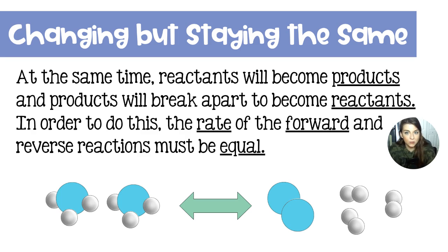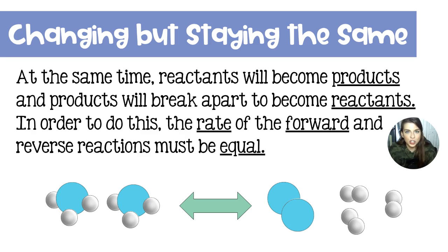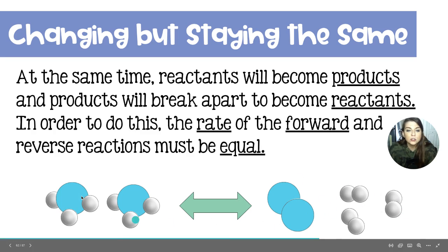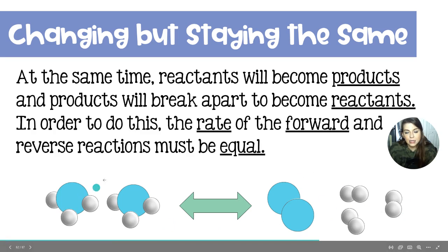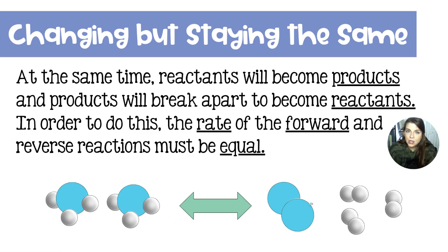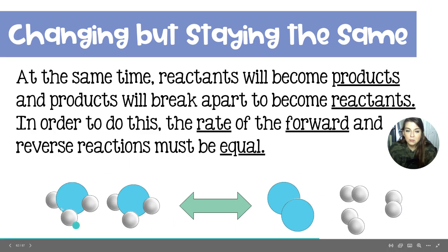At the same time, reactants are going to break apart and become products, and then products are going to break apart and become reactants. The rate at which the reactants break to form products and the products break to form reactants — those rates have to be equal to each other for the system to be in equilibrium. The rate of the forward reaction (left to right) is equal to the rate of the reverse reaction (right to left). The forward reaction is reactants becoming products; the reverse reaction is products becoming reactants.